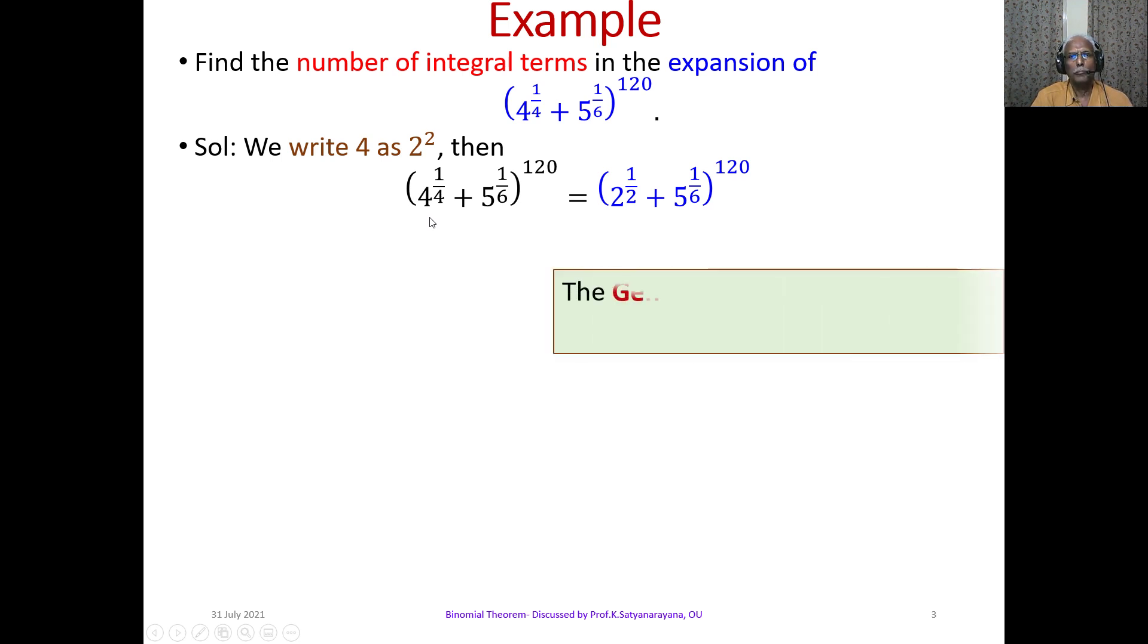We recall the general term in the expansion of (x + y)^n is T_(r+1) = nCr × x^(n-r) × y^r. Here x is 2^(1/2), y is 5^(1/6), n is 120.